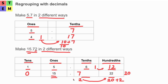We need to move two from the tenths place to the hundredths place, so we do seven minus two. That leaves five at the tenths place.